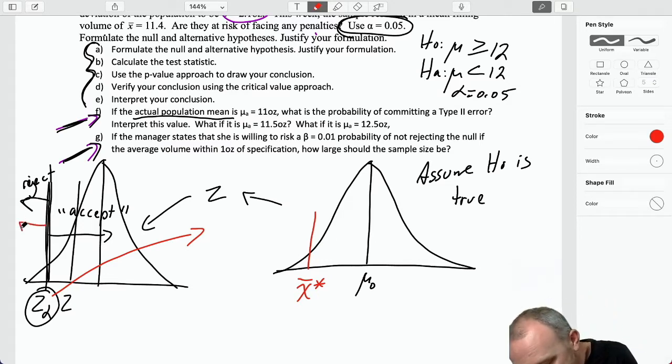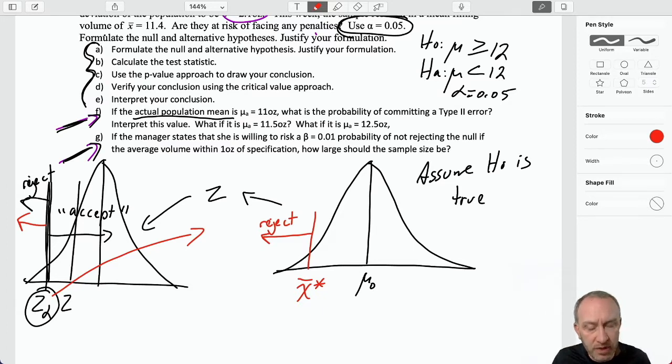So, if I would reject for any test statistics smaller than that critical value, that's the same now as saying I'm going to reject for any sample mean that is less than x-bar star. If I accept for any test statistic that is greater than that critical value, well, now that I've solved for x-bar star, I know that I'm going to accept for any sample mean that is greater than x-bar star.